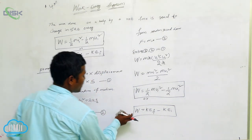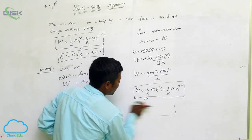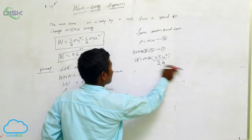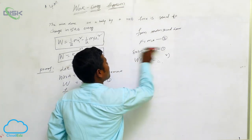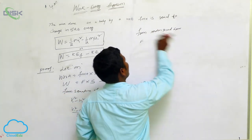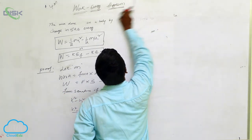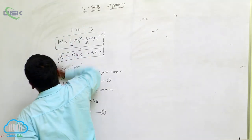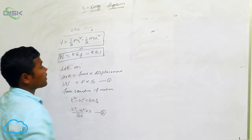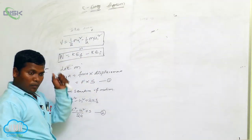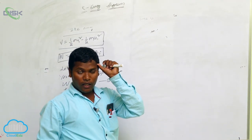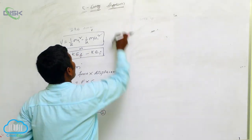This topic is worth four marks in the exam. You will get one question on the work-energy theorem along with a related problem. Next, we are going to discuss potential energy.